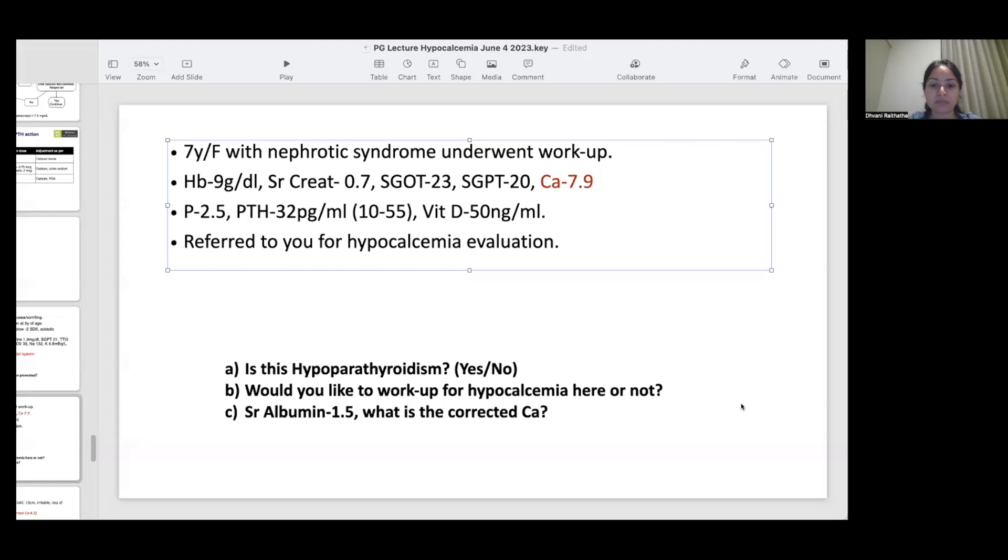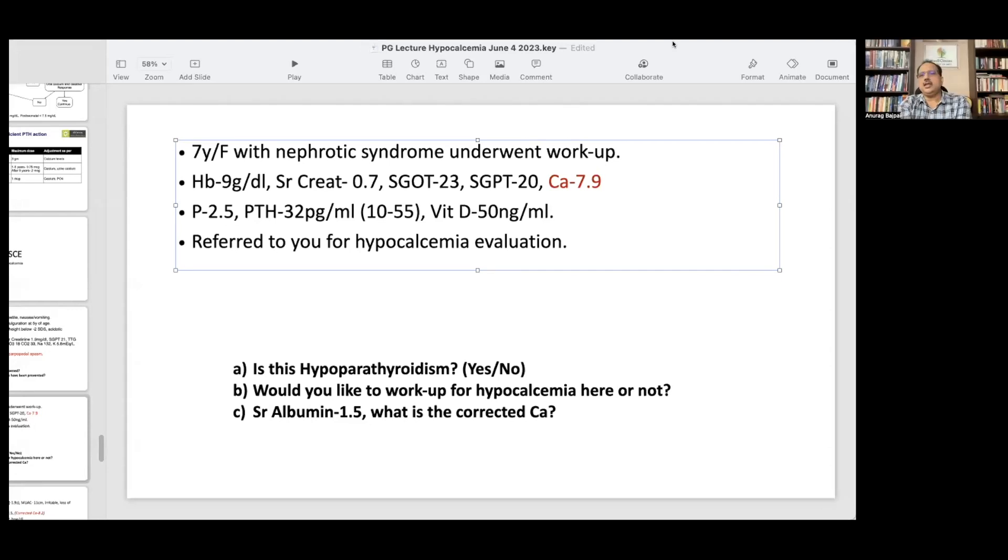Would you like to work up this child for hypocalcemia? You have a low level of total calcium and a PTH which is inappropriately normal. Dr. Anand has mentioned this is because of hypoalbuminemia, so this is not really hypocalcemia. How would you calculate the corrected calcium? Four minus 1.5, that is the serum albumin level mentioned here, so that is 2.5 times 0.8. The calcium will be 9.9, so this is not really a calcium deficiency. This is not really hypocalcemia in that perspective.